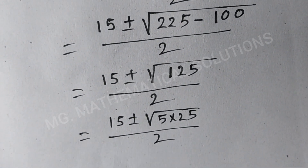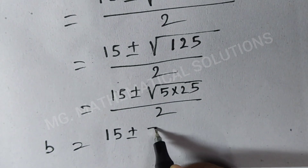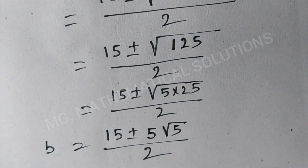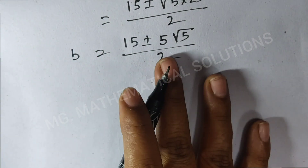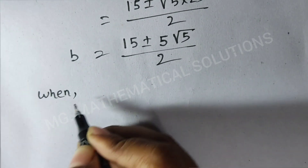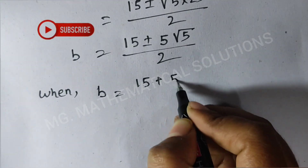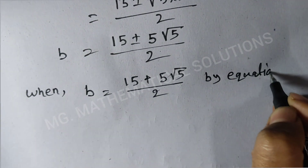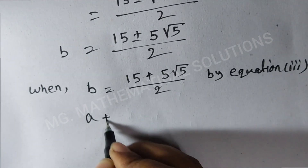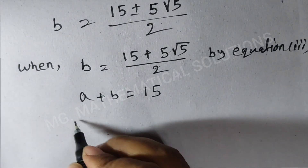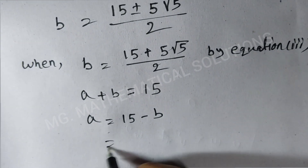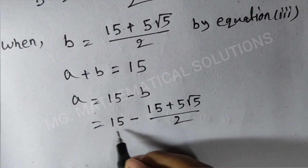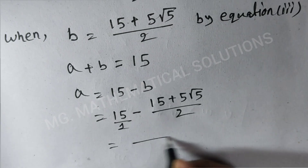Root 125 equals 5 root 5, so b equal to 15 plus or minus 5 root 5, divided by 2. Now we find the value of a. When b equal to (15 plus 5 root 5) divided by 2, using equation 3 a plus b equal to 15, so a equal to 15 minus b, equal to 15 minus (15 plus 5 root 5) divided by 2.